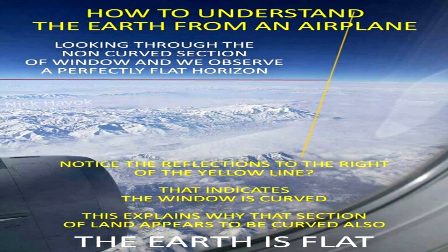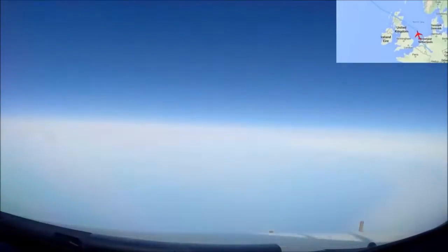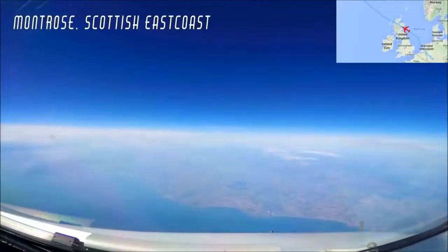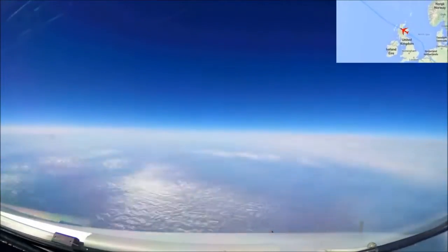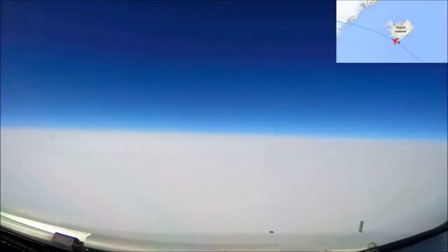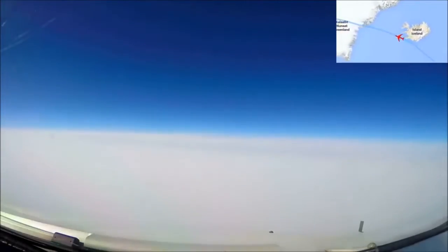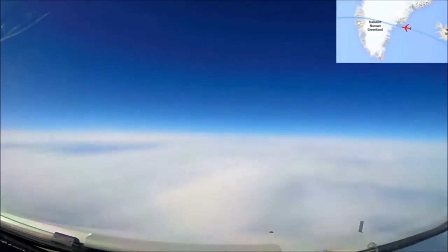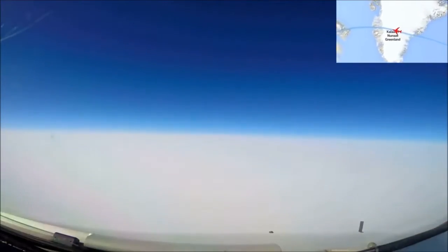Unfortunately, though, these windows also have the strange side effect of causing people to believe that the earth is a globe, because they mistake the curvature of the glass for that of the horizon. If these passengers would instead take a visit to the cockpit window and view the horizon from the pilot's vantage point, they would see clearly that the horizon remains completely flat as far as the eye can see.